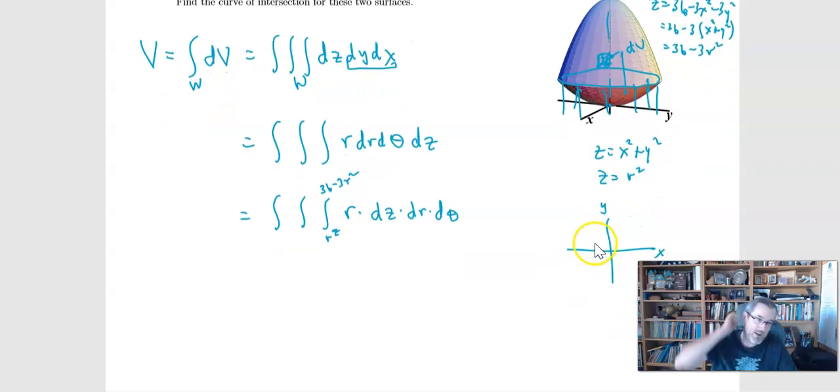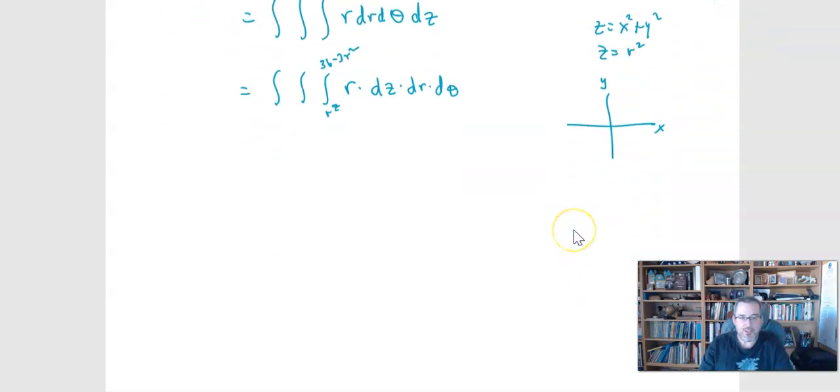So let's move it on down there and see what it would look like. The point of intersection is where those two functions come together. Remember the 36 minus 3X squared minus 3Y squared intersects with the X squared plus Y squared. So if we kind of algebraically 4X squared, algebraically 4Y squared, divide everything by 4.